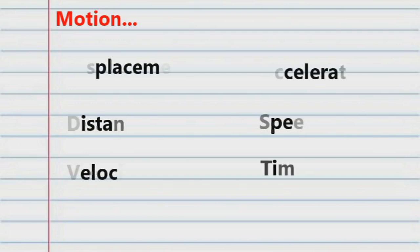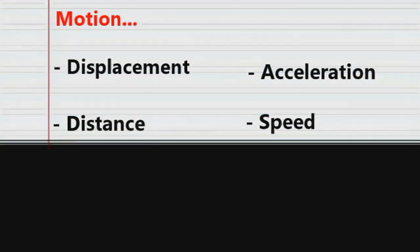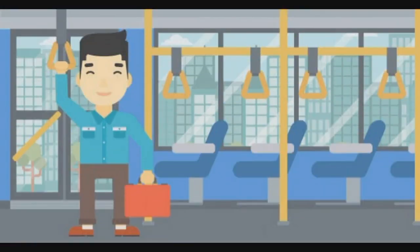Motion is described in terms of displacement, distance, velocity, acceleration, speed, and time. In this illustration, the bus is moving from its reference point of its place of origin. The bus moves with constant speed.